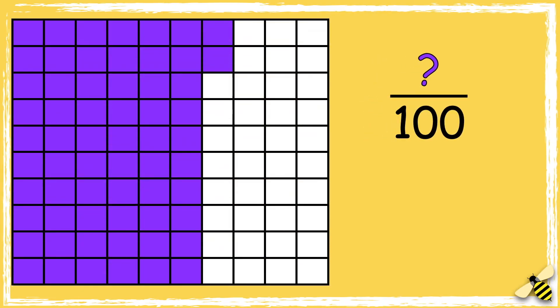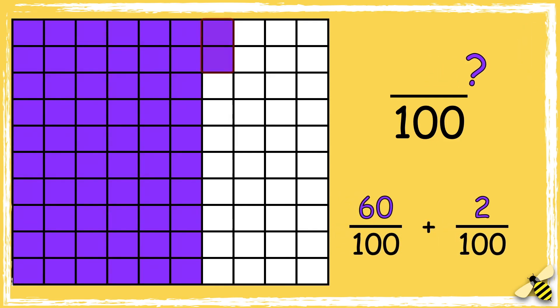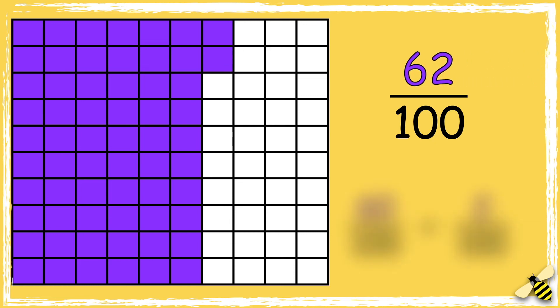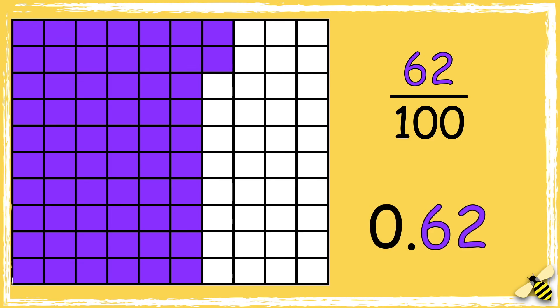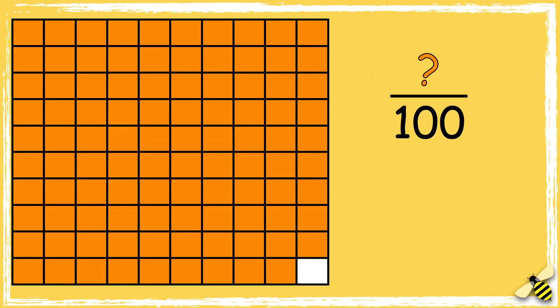Here's another one. What fraction of the grid is shaded? Pause the video to give yourself time to work out the answer. Press play when you're done. So we have sixty and two, so the grid shows sixty-two hundredths. As a decimal this is zero point six two.